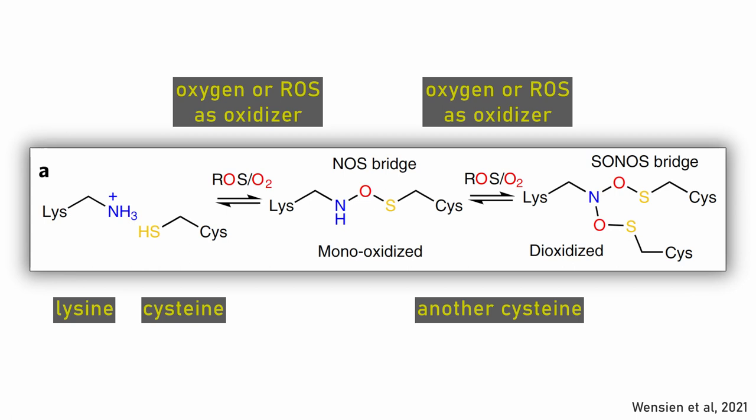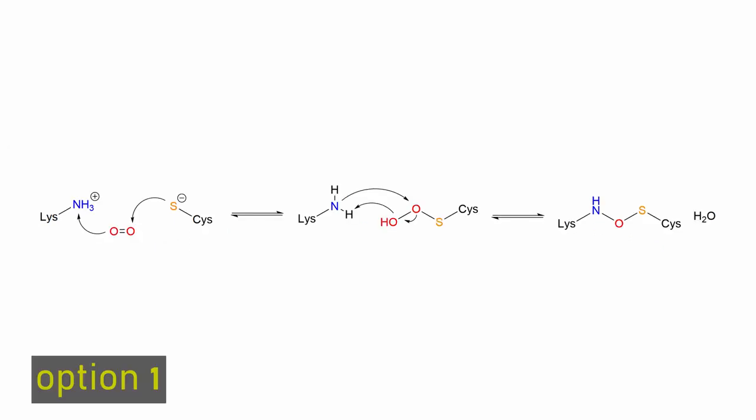The mechanism is unknown, but the authors of the paper proposed three possibilities. Firstly, the oxidation of the thiolate to a thiohydroperoxy species, then a direct attack of the lysine's nitrogen at the alpha oxygen of the peroxycysteine, with water as a leaving group.